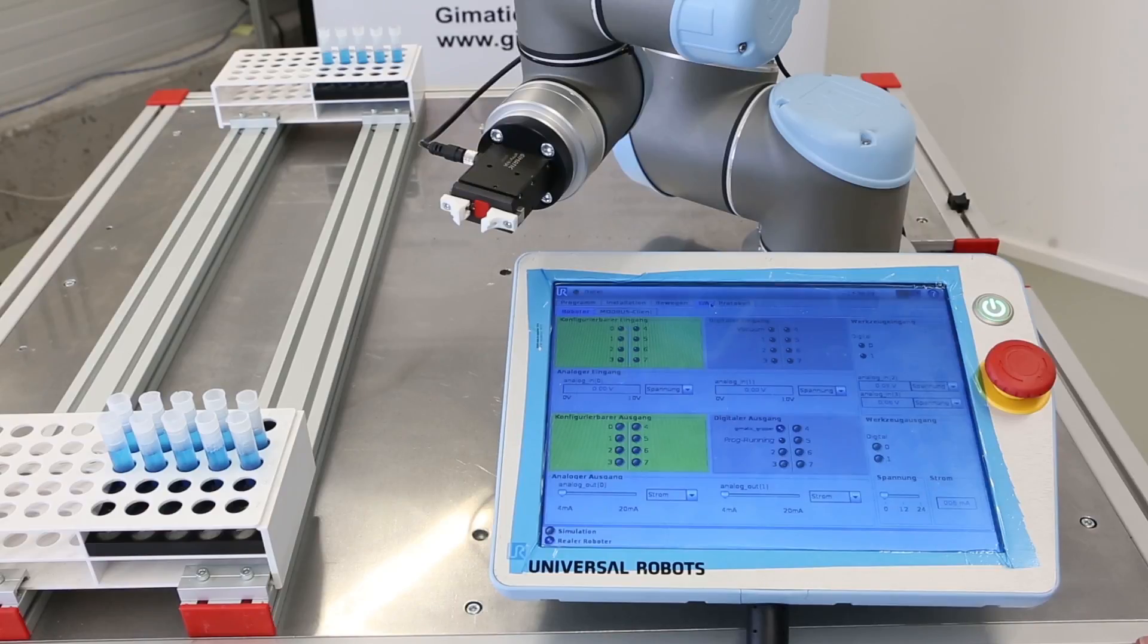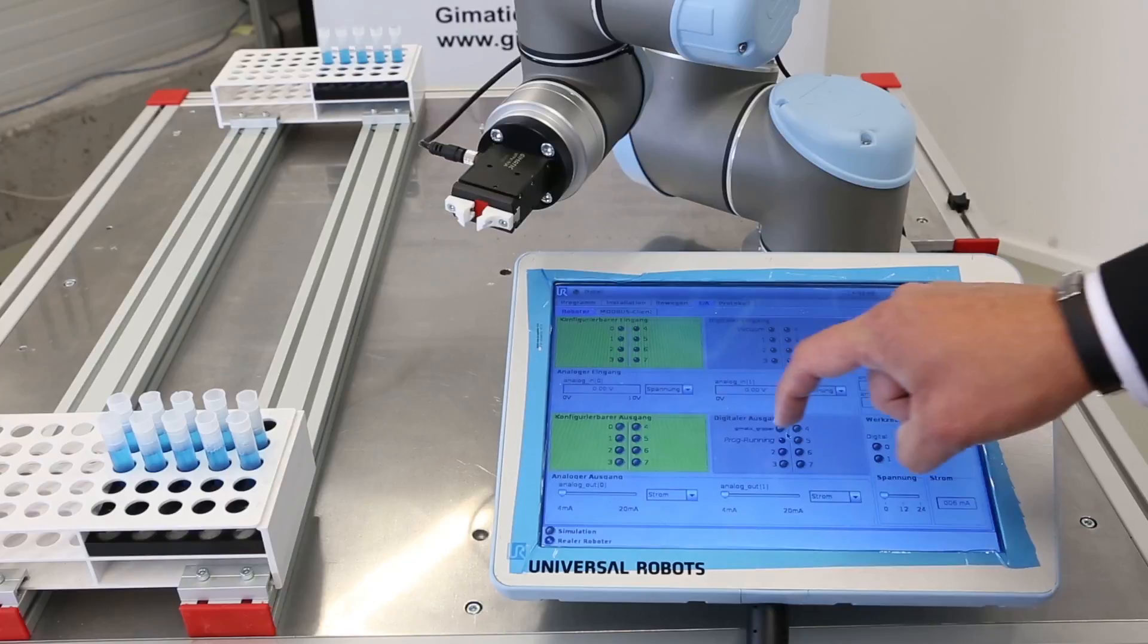After the installation, the use is very easy. Because when you marked your digital output at your universal robot, you just press enter and you see the gripper closes.